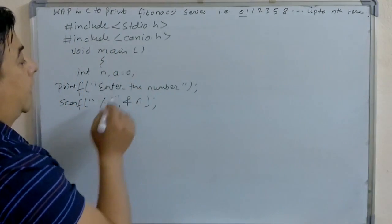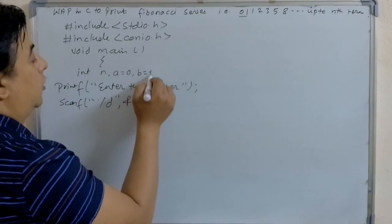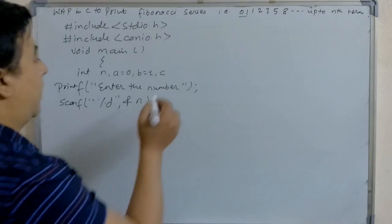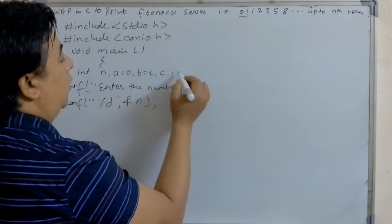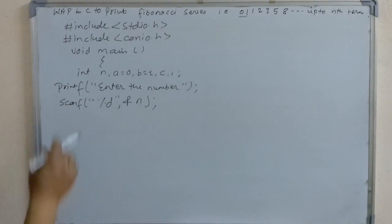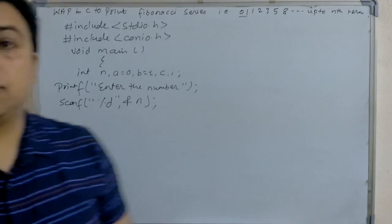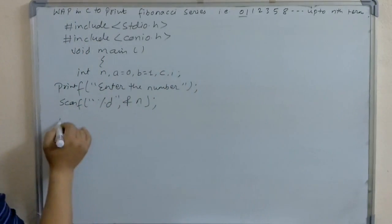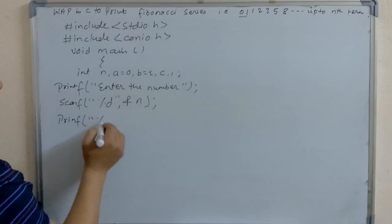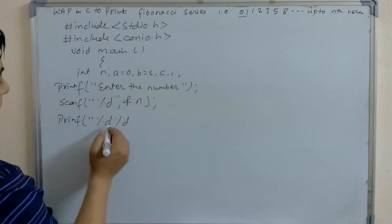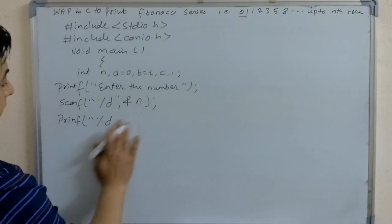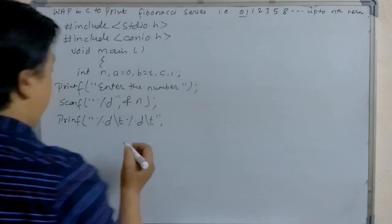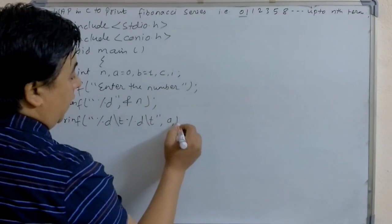So here we declare: a is equal to 0, b is equal to 1, and then the variable c. After that, we have to use a loop, so we also declare i. After asking the user for input, we print the first two numbers 0 and 1 using printf with %d and \t for tab, passing a comma b.